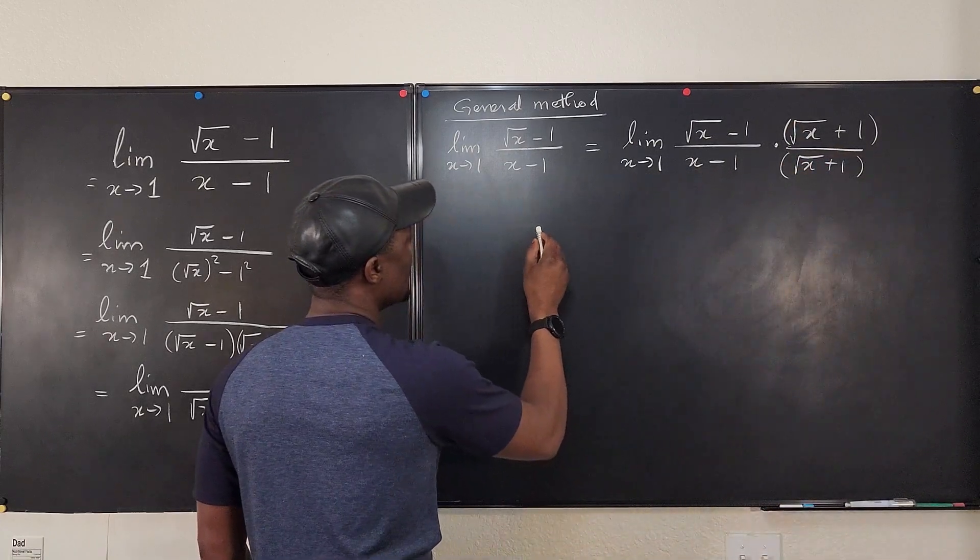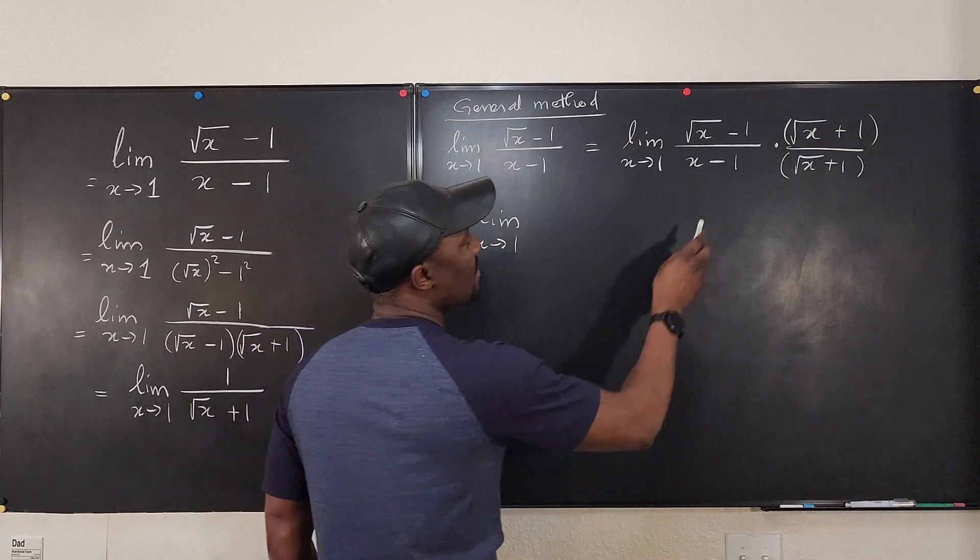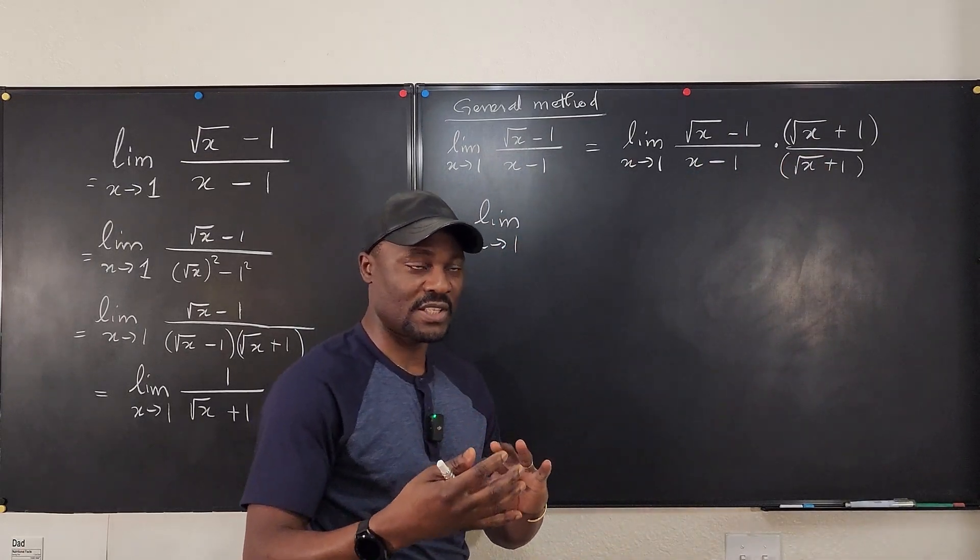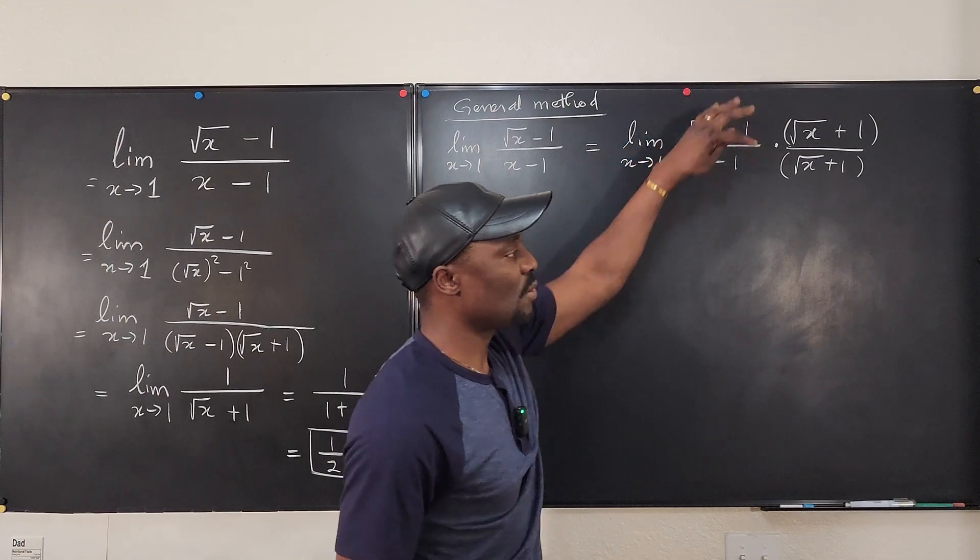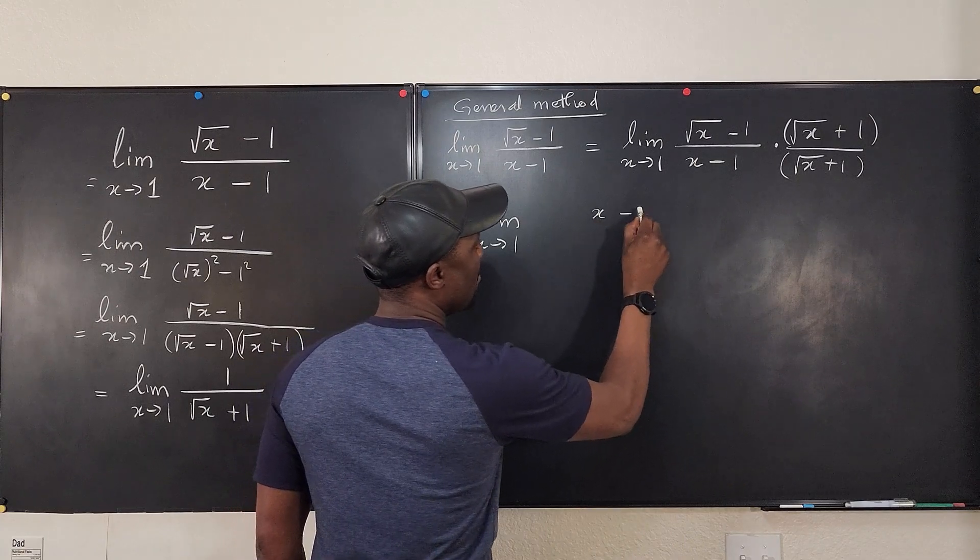So this is going to be equal to the limit as x goes to 1. If we multiply this by this, remember, if we multiply two radicals, the conjugate, it just gives you the square of the first term minus the square of the second term. So on top here, you're going to end up with just x minus 1.